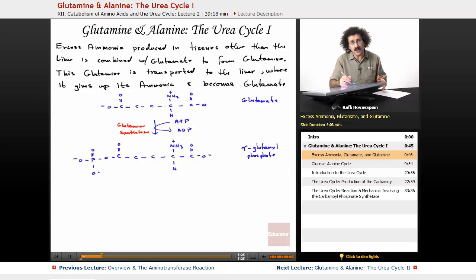So gamma glutamyl phosphate. So again, we're just putting this phosphate here to create a good leaving group, because now the ammonia is actually going to come in and attack this and this is going to be the leaving group. So now what we have is the next step. What comes in is NH4 plus or NH3, and what is going to leave is the phosphate.